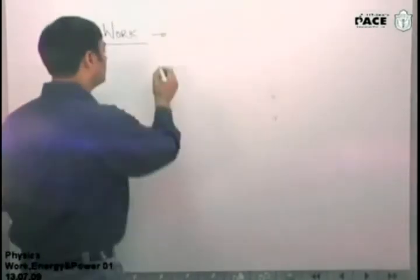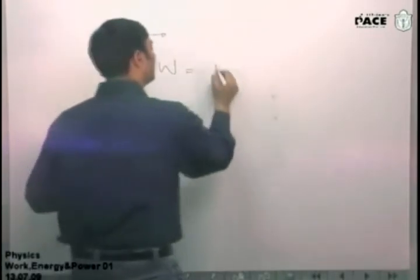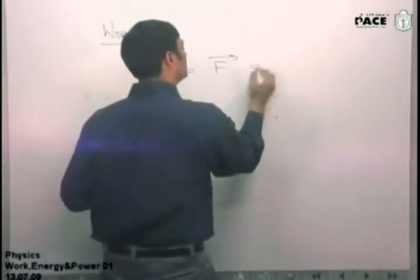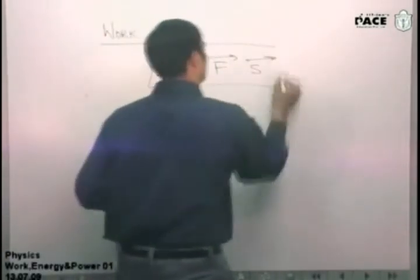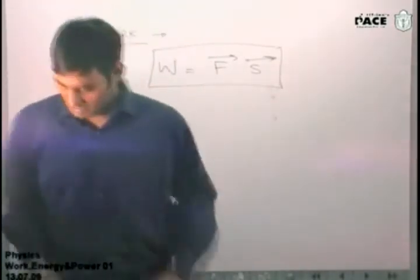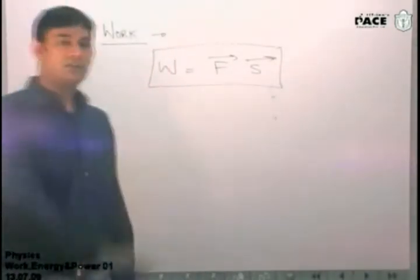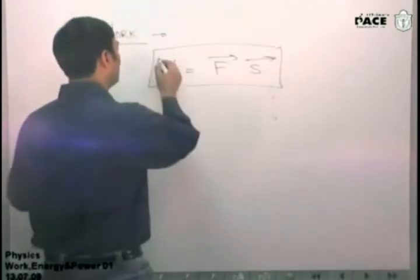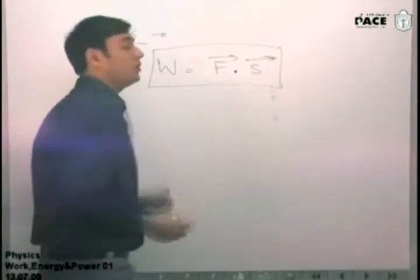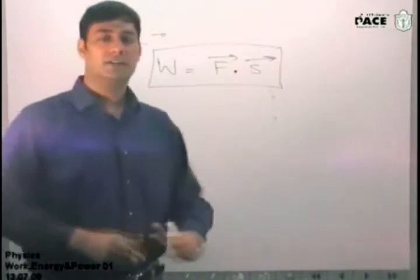Now, work done by the force is equal to F dot S. Till here, you must be knowing already. Please, please note it down. Work done by a force is equal to F dot S. Where? Please understand.